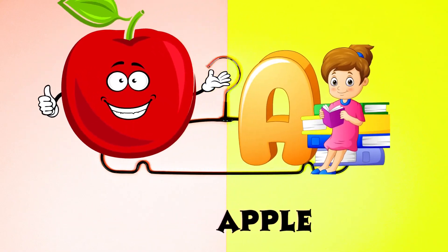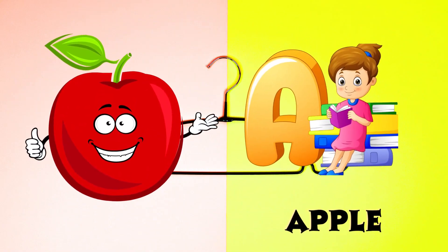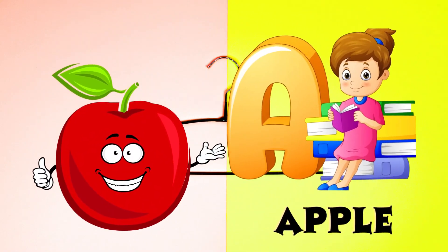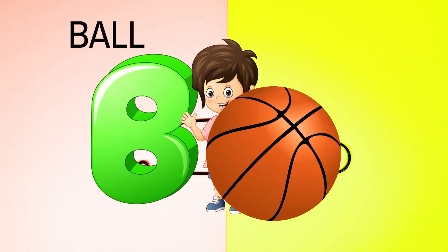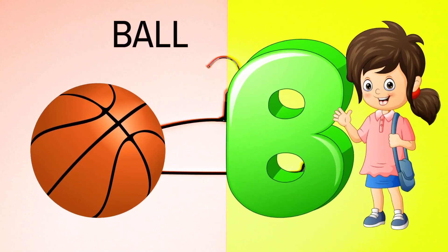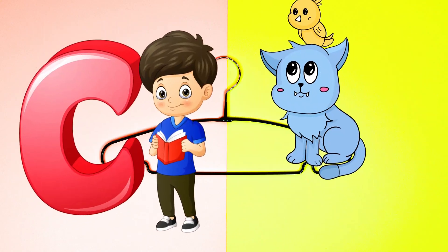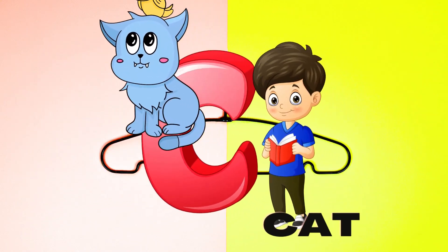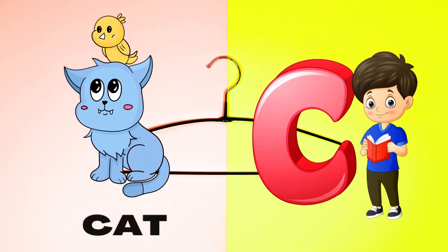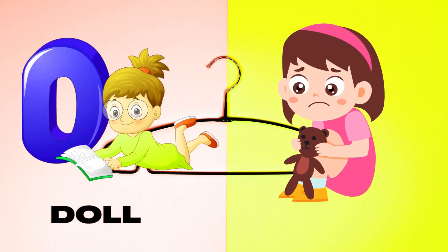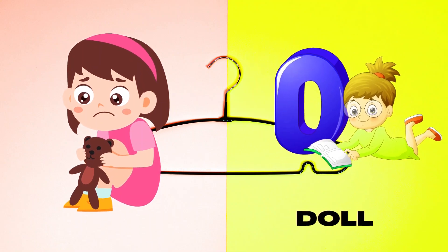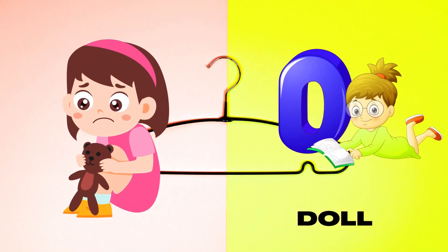A is for Apple, A-A-Apple. B is for Ball, B-B-Ball. C is for Cat, C-C-Cat. D is for Doll, D-D-Doll.